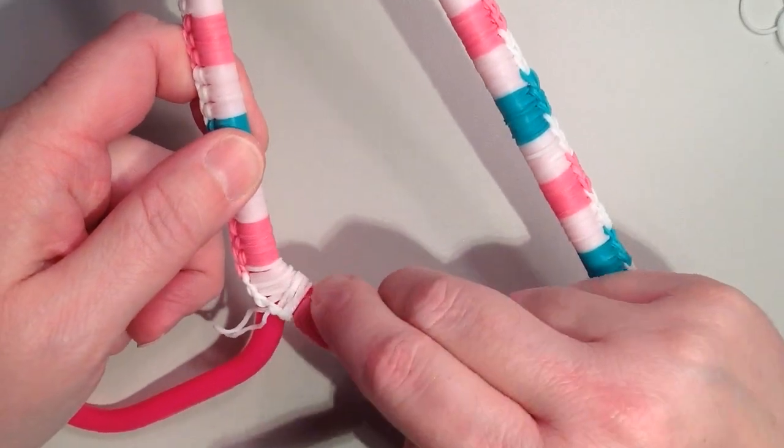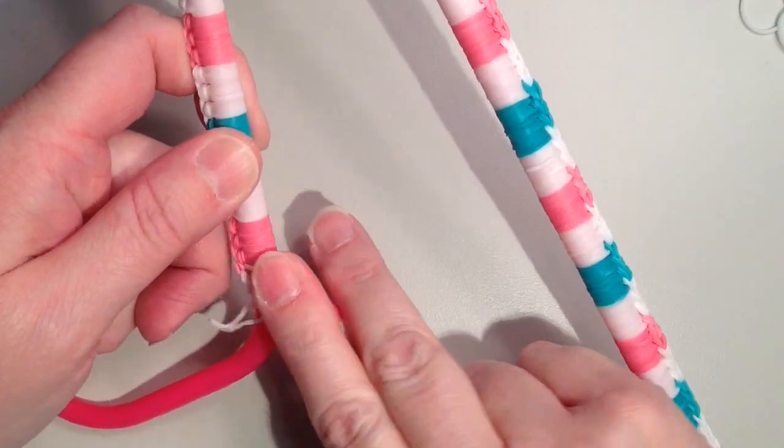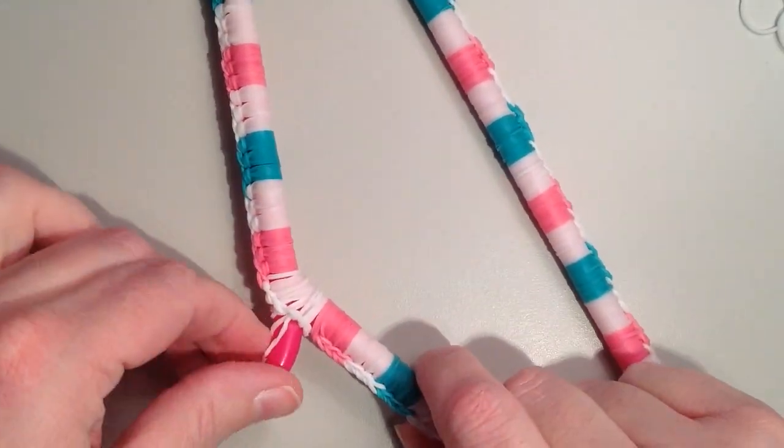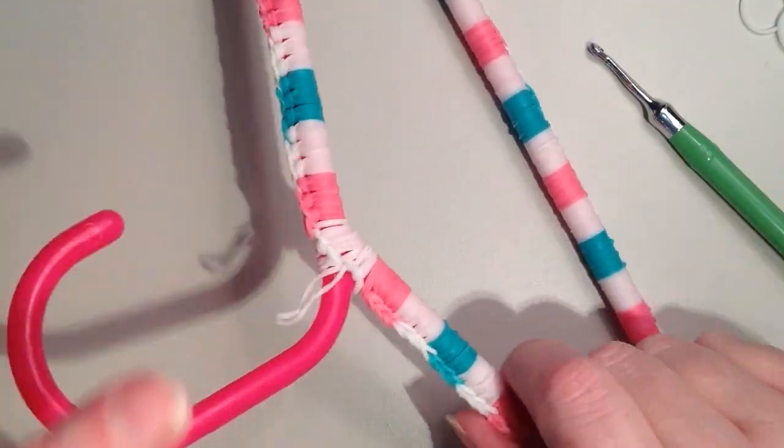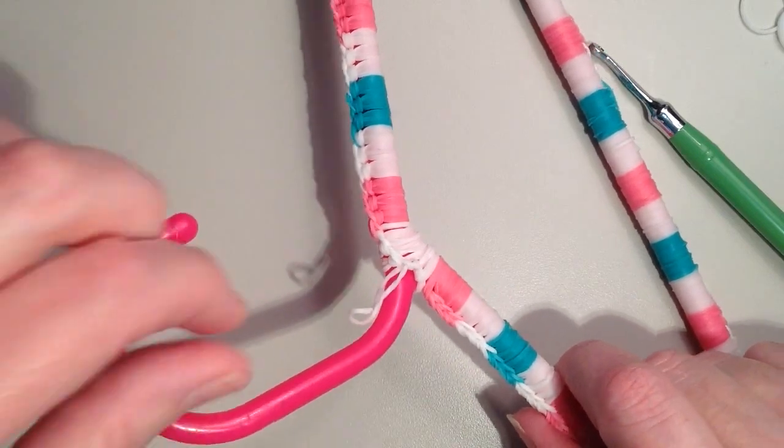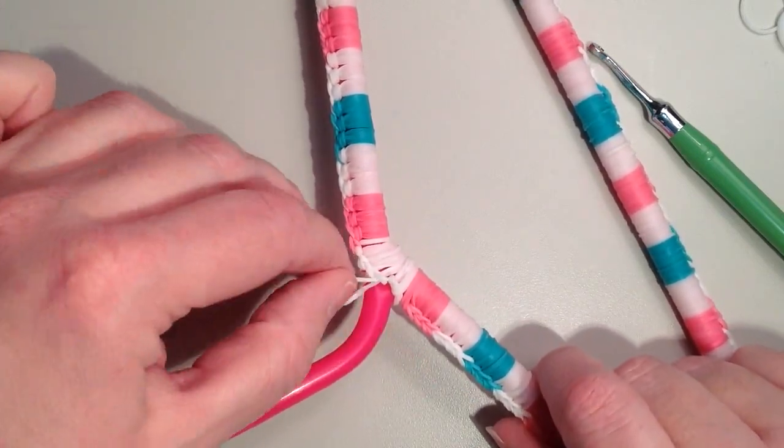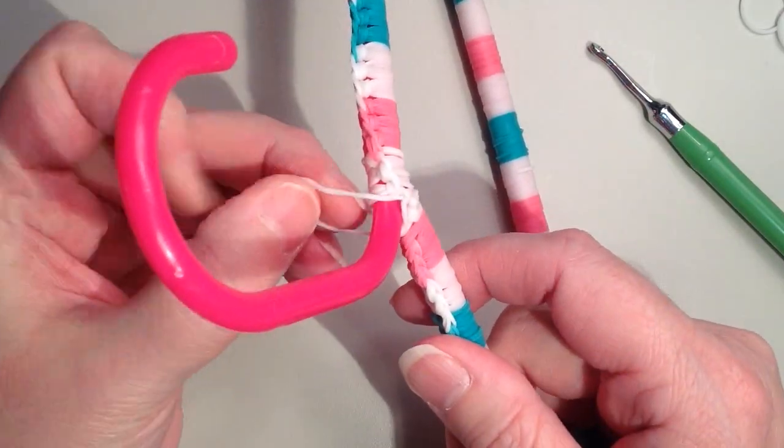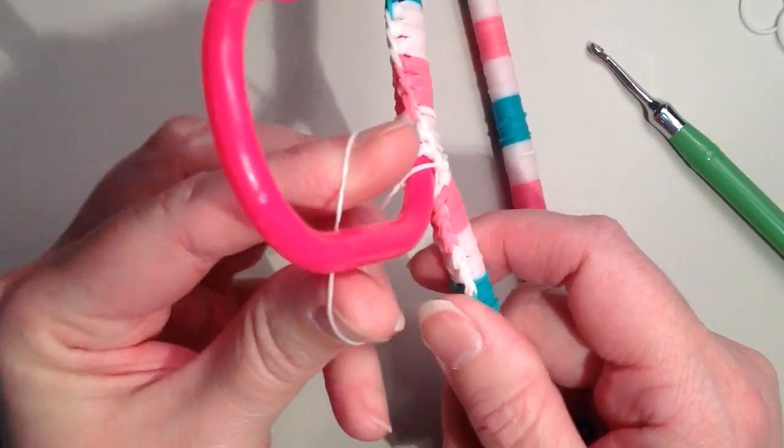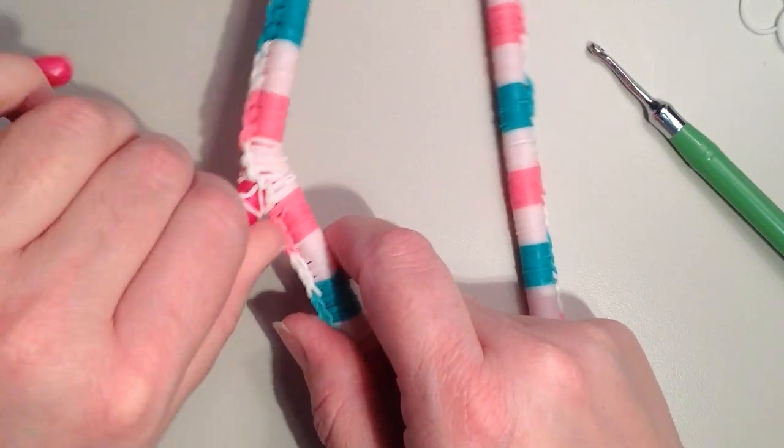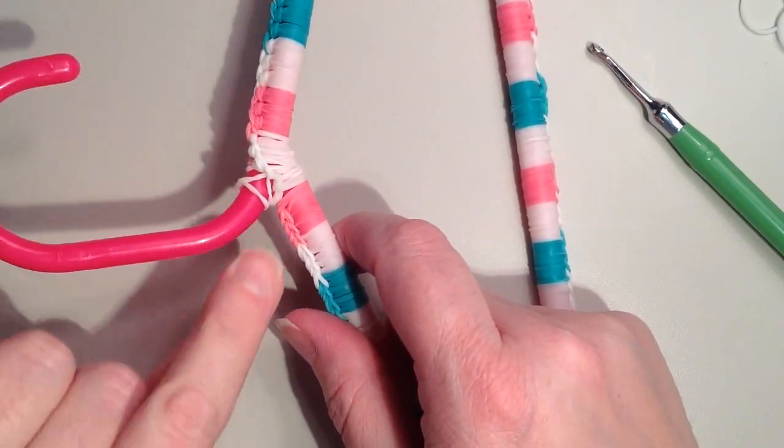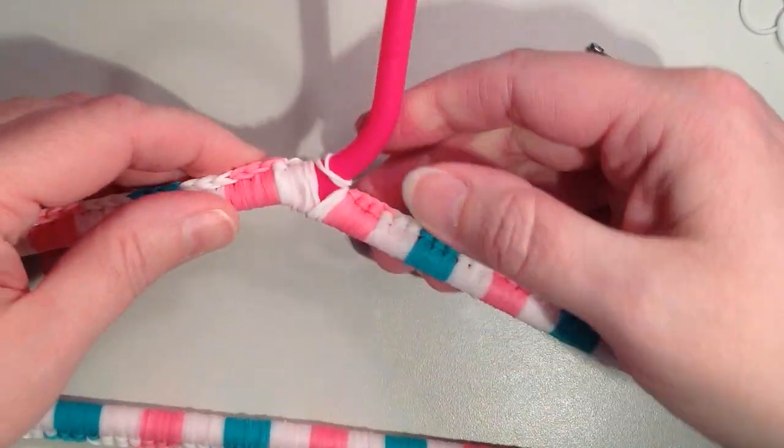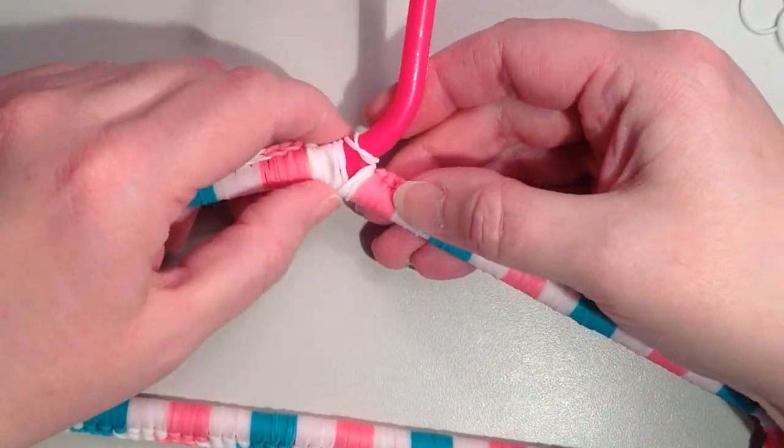And I can see some of these look like they're overlapping on the back. You can just fix any of that that you need to. And then what I'm going to do is just wrap it around this hook part of the hanger. It is going to be a long stretch. And let me just twist it and wrap it around again. It's definitely going to be tight, but I want to make sure that that's not going to come apart. So now it's finished here.